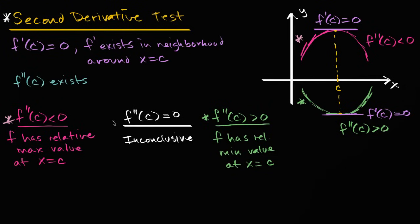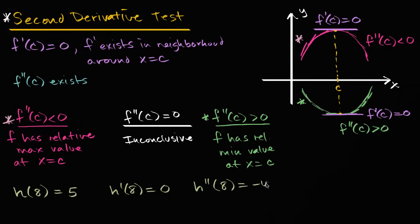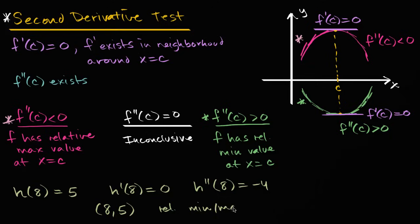Let's do a quick example to see if this has gelled. Let's say I have some twice differentiable function h, and I tell you that h of eight is equal to five, h prime of eight is equal to zero, and the second derivative at x equals eight is equal to negative four. Given this, can you tell me whether the point (8, 5) is a relative minimum, a relative maximum, or not enough info? Pause the video and see if you can figure it out.